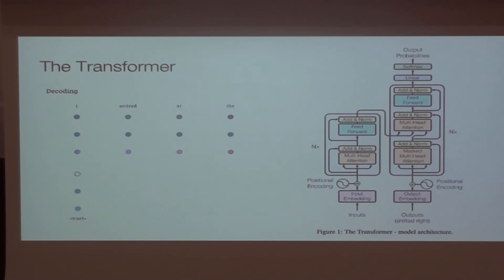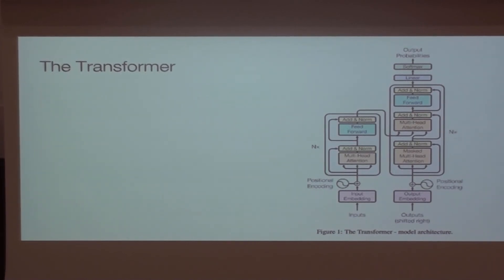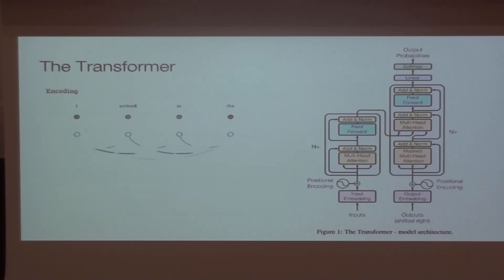You can apply the transformer at the character level rather than word level, so it can handle things not in the vocabulary. The model is mathematically just something that takes an input sequence and produces an output sequence — nothing says the tokens have to be words. In practice it runs faster on words, but if you make the network a bit larger it gives almost the same results on characters.